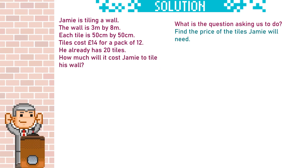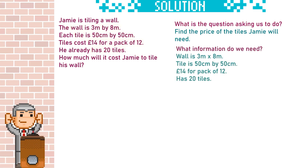Next, what information in the question will we need? The first part is that the wall is 3m × 8m. Each tile is 50cm × 50cm. Tiles cost £14 for a pack of 12 and he already has 20 tiles. Let's write this information down so that we can just use this information rather than being bogged down by all the other words in the question.